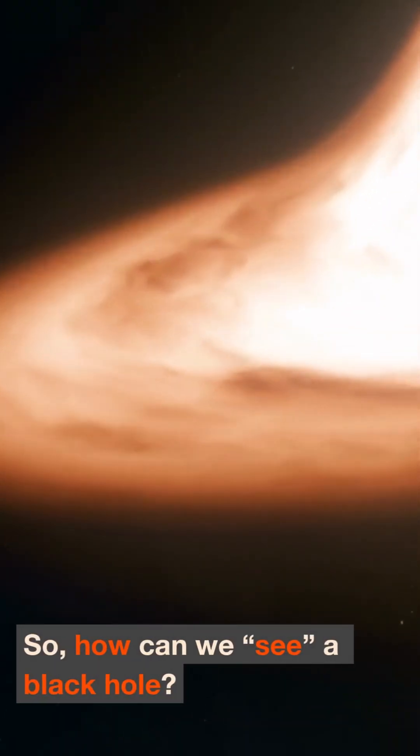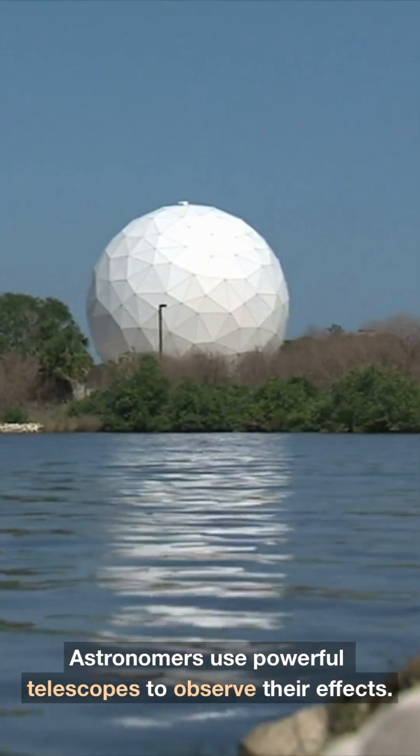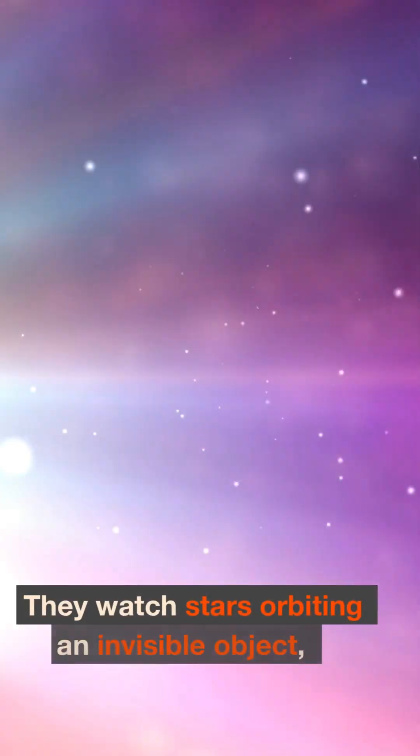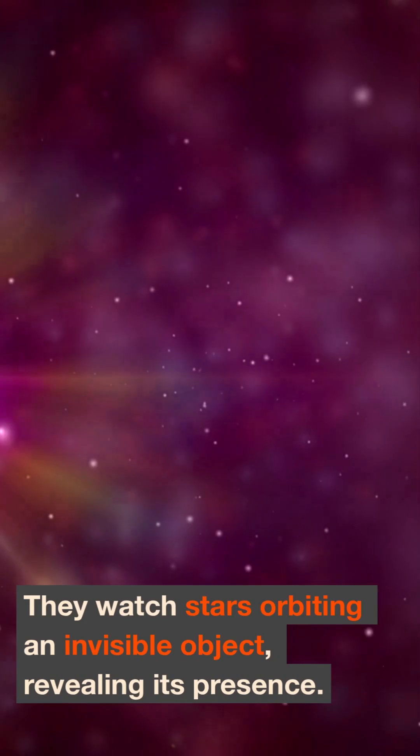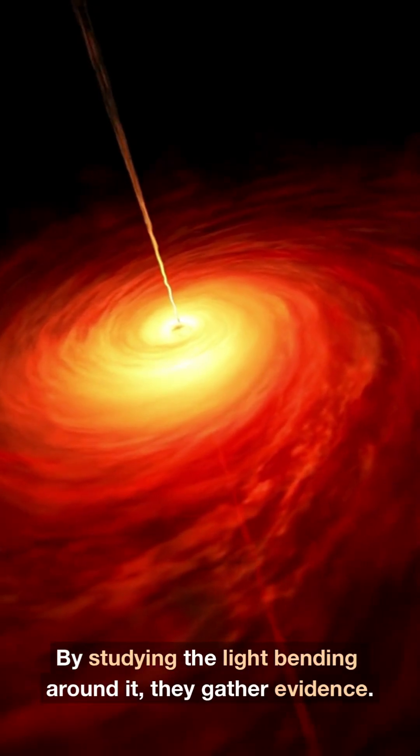So how can we see a black hole? Astronomers use powerful telescopes to observe their effects. They watch stars orbiting an invisible object, revealing its presence. By studying the light bending around it, they gather evidence.